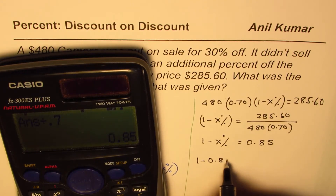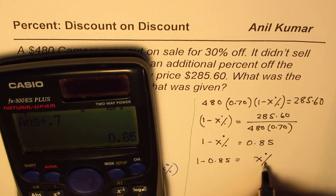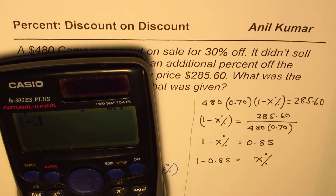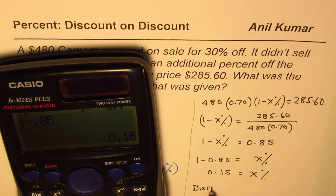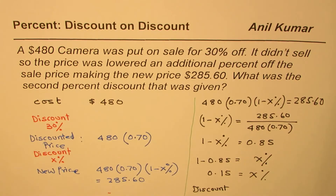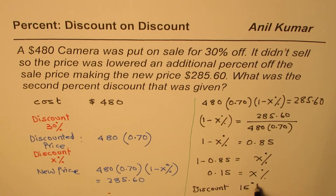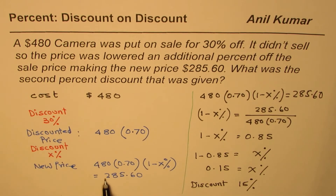From here we know (1 minus X%) = 0.85. Rearranging, X% = 1 minus 0.85, which is 15%. So the second discount is 15%, which brings the price down to $285.60. I hope you understand the strategy — working like this, we can quickly find solutions to complicated percent problems involving discount on discount or combinations of markup and discount.